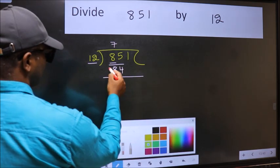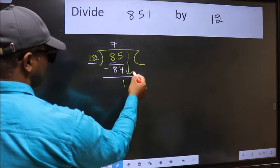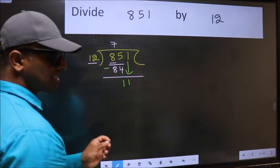Now we should subtract: 85 minus 84 equals 1. After this, bring down the next number, so bring down the 1. After this step, the mistake happens.